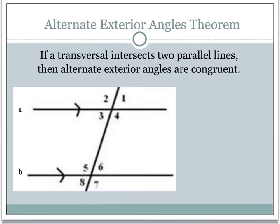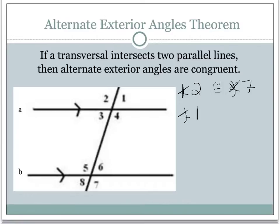The next one is the alternate exterior angles theorem. If a transversal intersects two parallel lines, then the alternate exterior angles are congruent. Notice we go back to them being congruent. The alternate exterior angles in this picture are: angle two is congruent to angle seven, and angle one is congruent to angle eight. We know they're congruent because that transversal intersects those parallel lines.